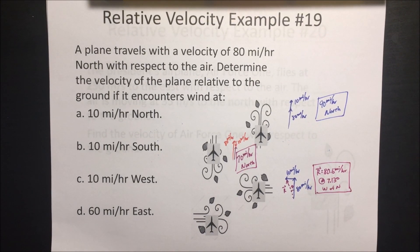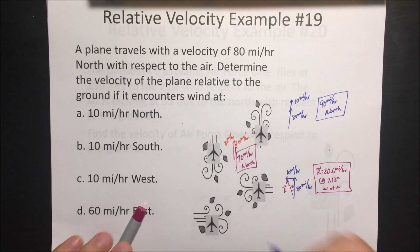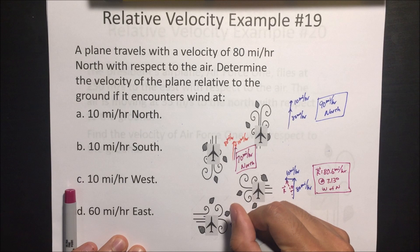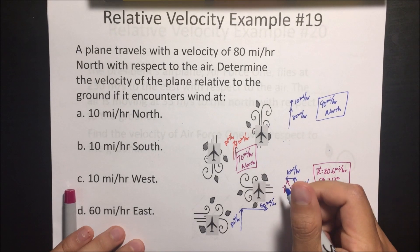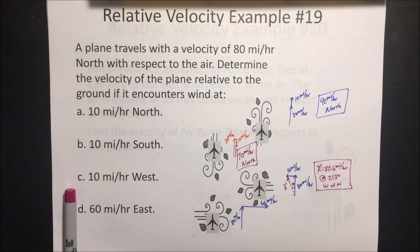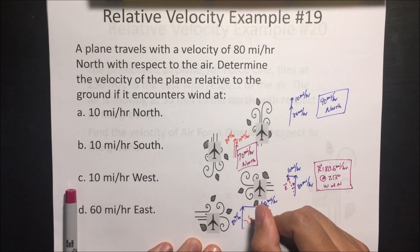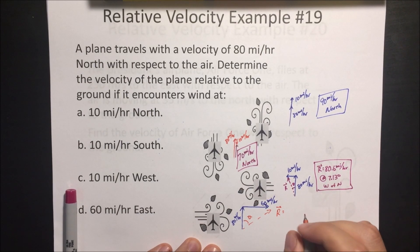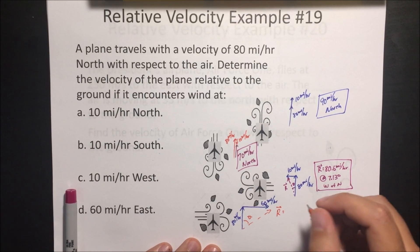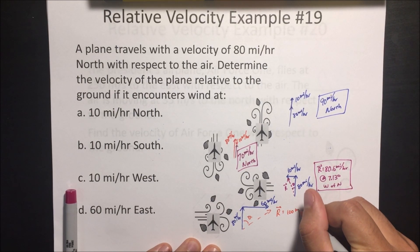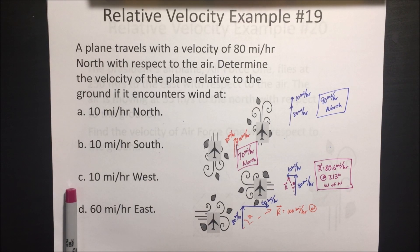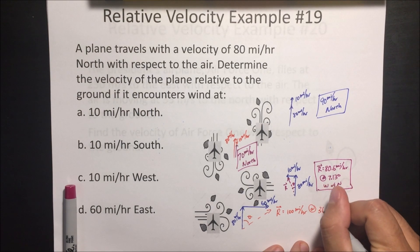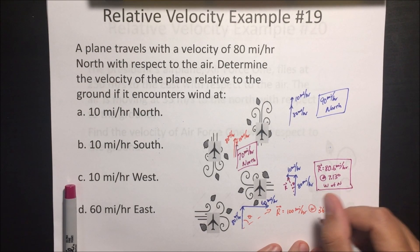The next one is the same thing but the wind is going in the eastward direction, so it's a little different. The plane is going 80 miles an hour north, and the wind is pushing it to the east at 60 miles an hour. Using the Pythagorean theorem, the resultant is 100 miles an hour. The angle is inverse tangent of 60 divided by 80, which gives 36.87 degrees east of north.